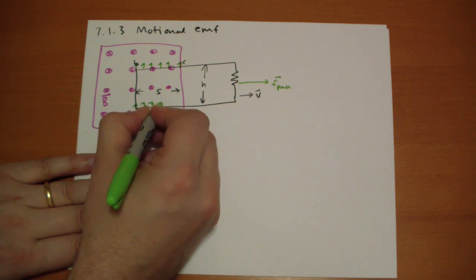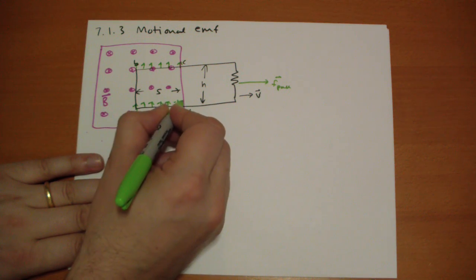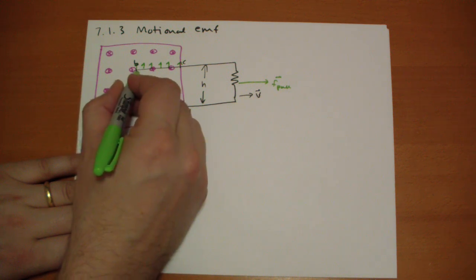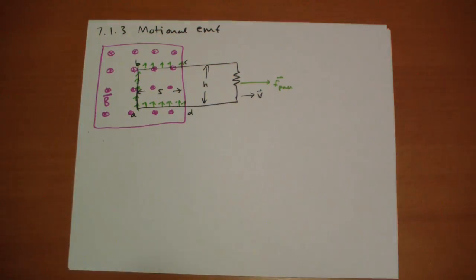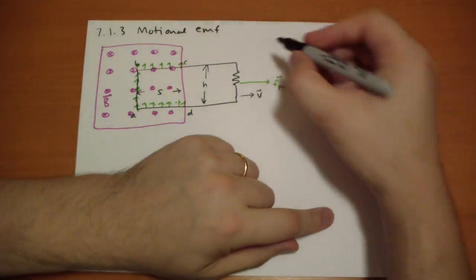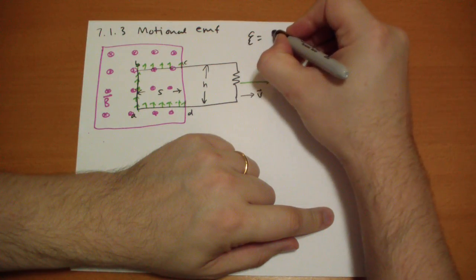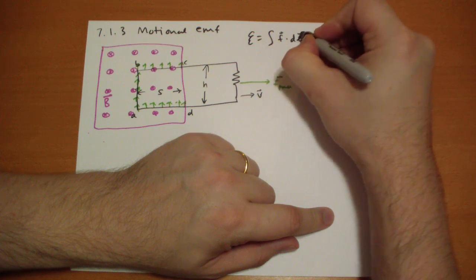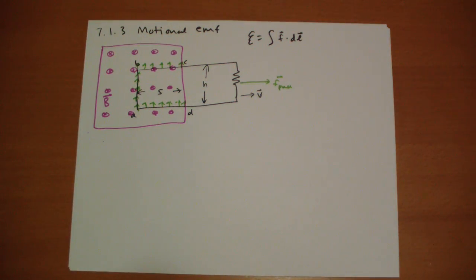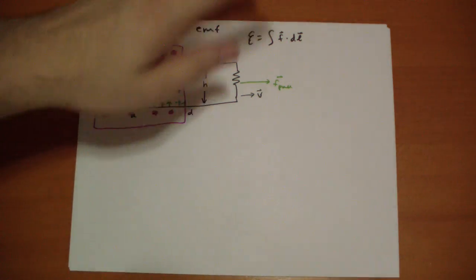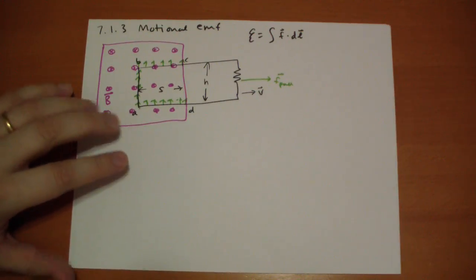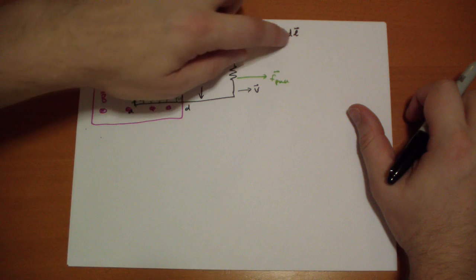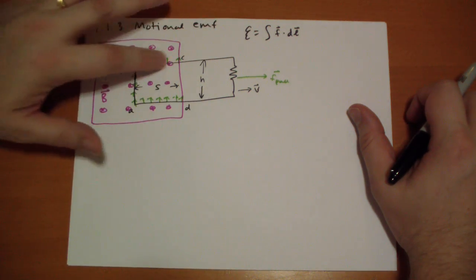And because the charge isn't going to leave the loop, the only place where that force actually translates to the EMF. Remember, EMF is equal to the integral of the force per unit charge dot the infinitesimal length unit, it's a path integral. So over here, the force is perpendicular, the force per unit charge is perpendicular to the path. And so that's going to give us zero. These two components don't contribute anything.